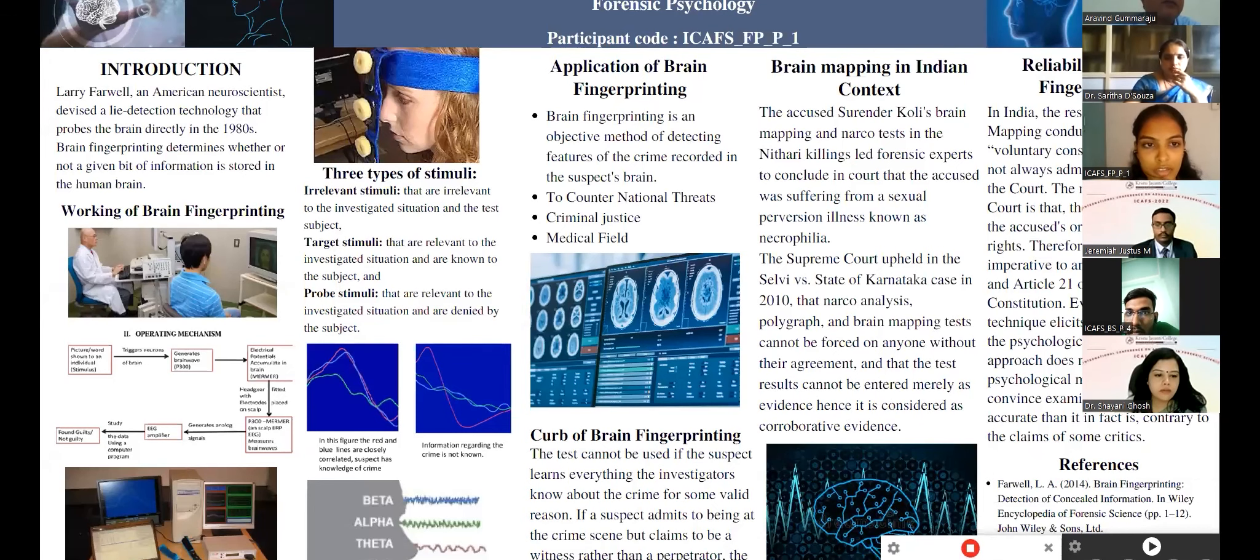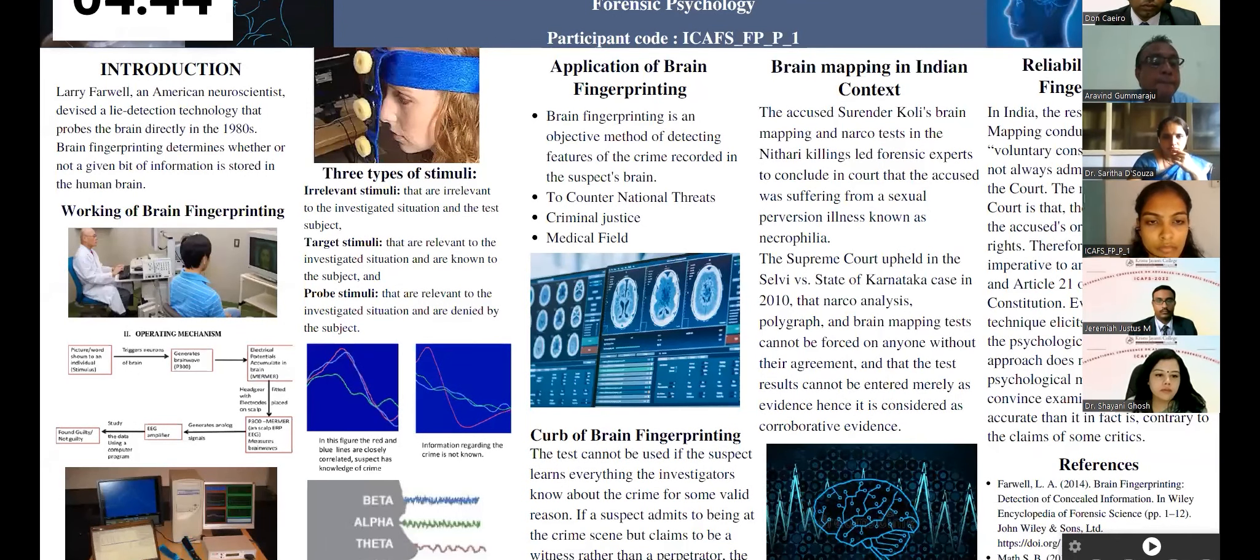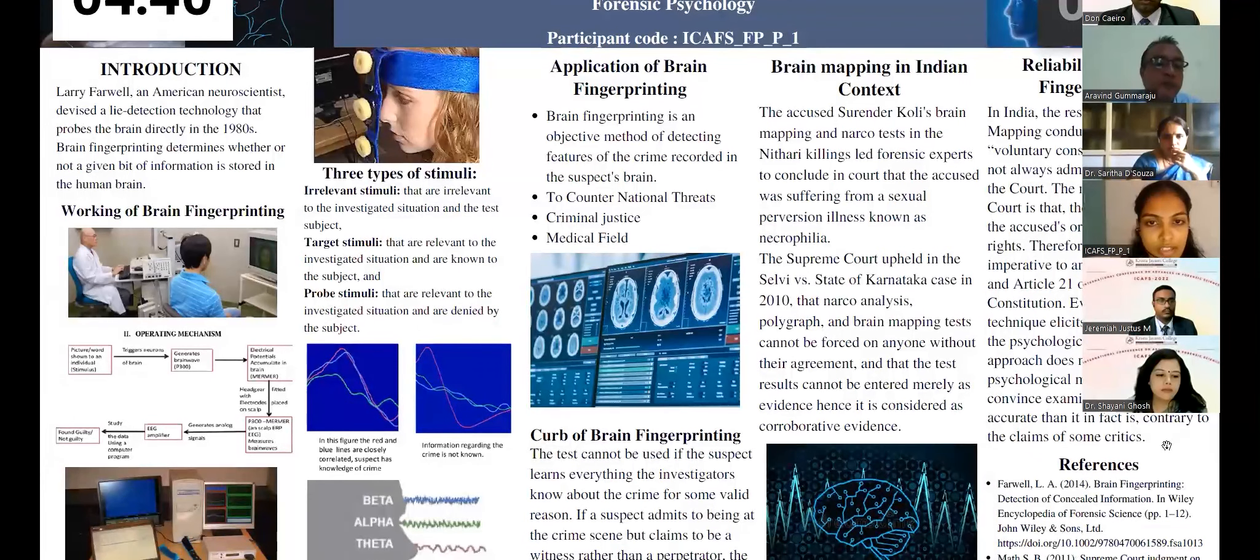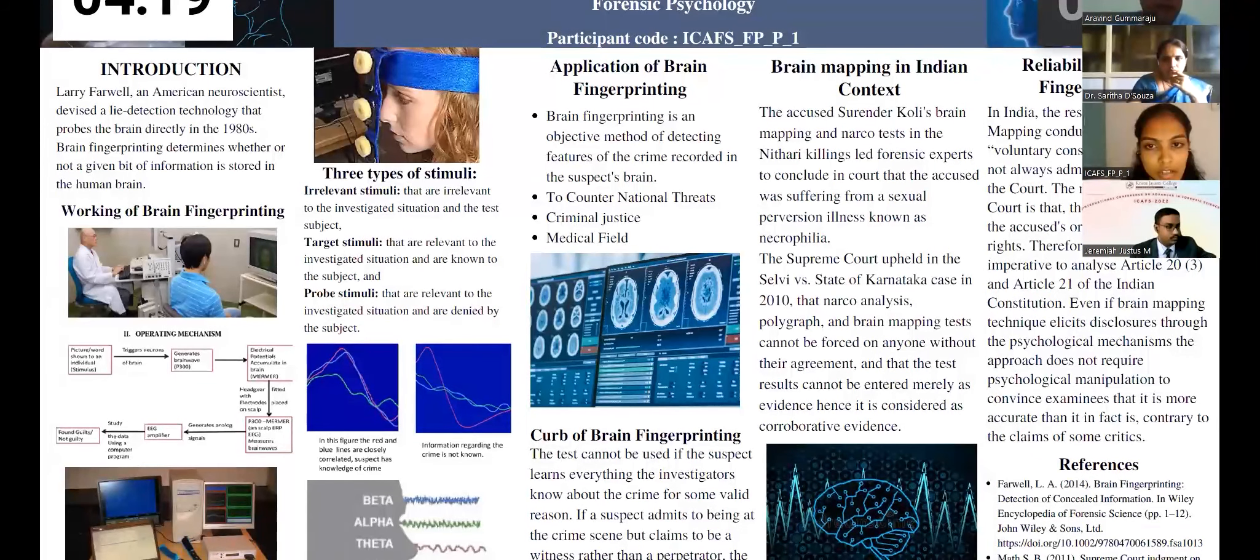Good afternoon, everyone. I am here to present a poster on reliability of brain fingerprinting in detecting concealed information. So, starting off with the introduction. In 1980, an American neuroscientist, Larry Farwell, devised a brain-based fingerprinting technique. He found that a memory encoding-related multifaceted electroencephalographic response, that is MERMER, is initiated in the accused when the brain recognizes information pertaining to the crime. Brain fingerprinting is also known as brain mapping, and it refers to the EEG or ERP signals, that is electroencephalogram or event-related potential signals to detect deception. Commonly used method in India is called the brain electrical activation profile test, also known as P300 waves test.